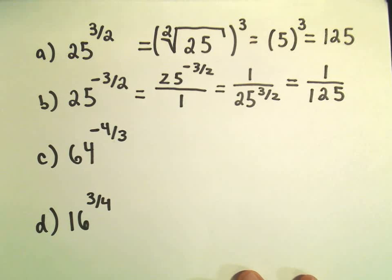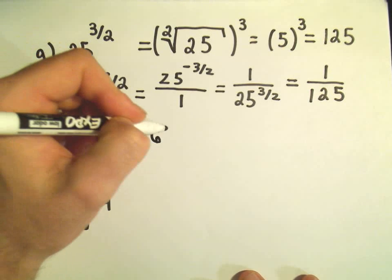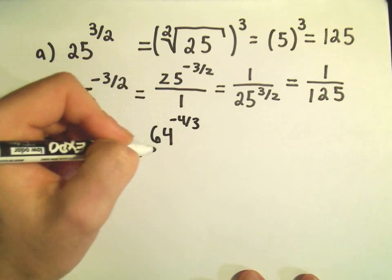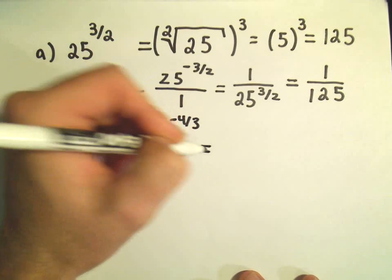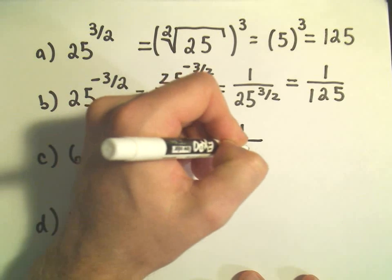Okay, so 64 to the negative 4 thirds, let's just do the same thing. So that would be 64 to the negative 4 thirds over 1. Okay, so I can rewrite this as 1 over 64 to the positive 4 thirds.